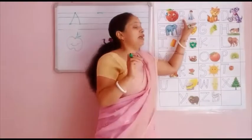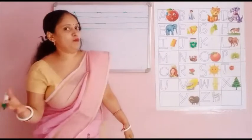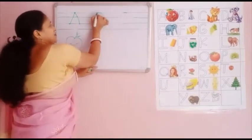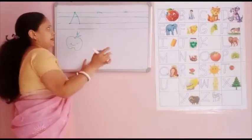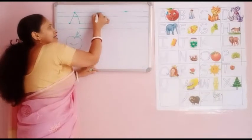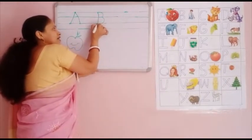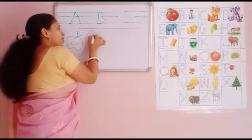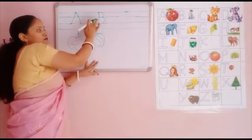Now next alphabet is B. B for boy. B for ball. B for bag. Now one, two dots. Only two dots for B. Standing line. Small curve. Again curve. B for ball.